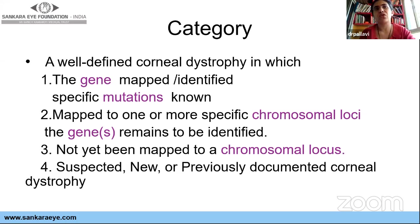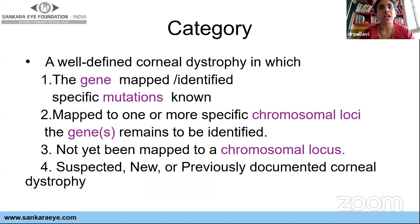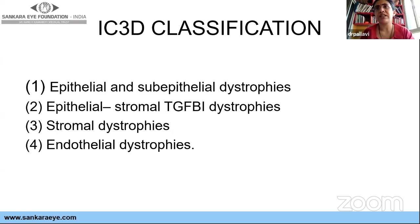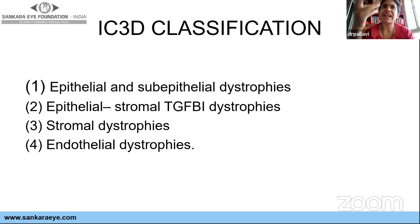Why is it important to know the genetic classification? Because research is moving toward gene-targeted therapy. Excitingly, mesenchymal stromal stem cells are being studied — especially for stromal dystrophies — and may be used as drops or injections to prevent disease progression. According to the IC3D classification, we now have epithelial and sub-epithelial dystrophies, epithelial and stromal TGF-beta dystrophies, and stromal and endothelial dystrophies.